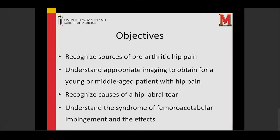The objectives for today are to recognize the sources of pre-arthritic hip pain — hip pain in younger patients who don't have arthritis yet — and to know which imaging to get. We'll cover the x-ray views that we want in young patients. Labral tears are very common, and they're caused by something — there are multiple things that can cause them, so you want to know why the person has a labral tear. We'll talk mostly about femoroacetabular impingement syndrome, or FAI.